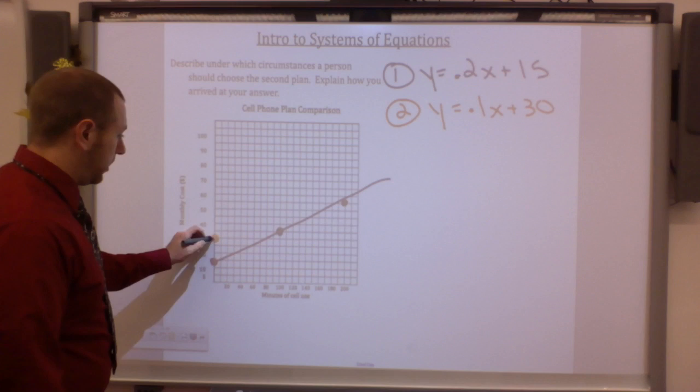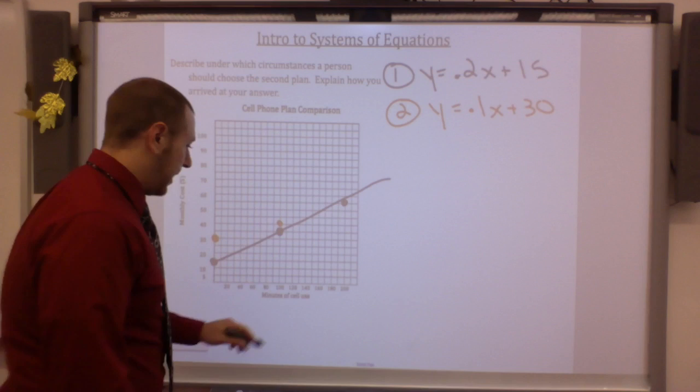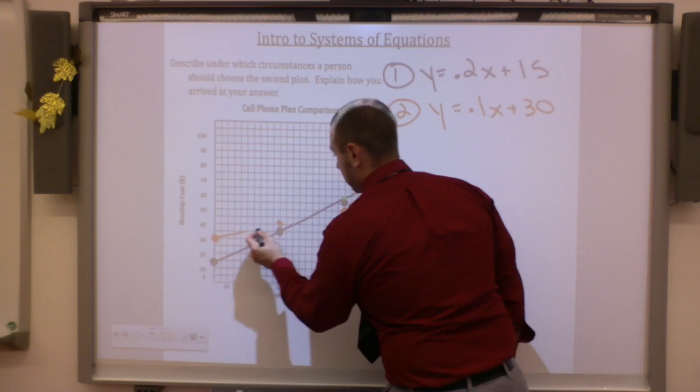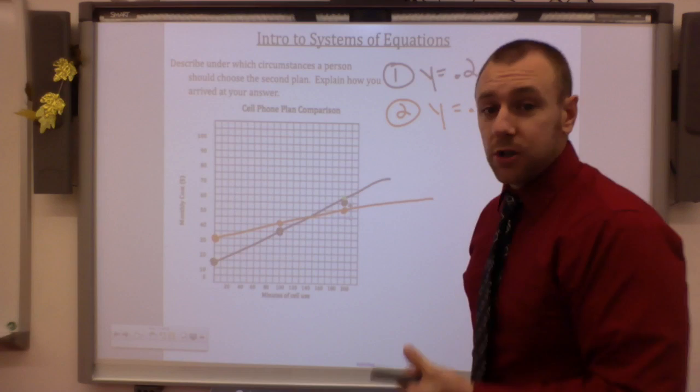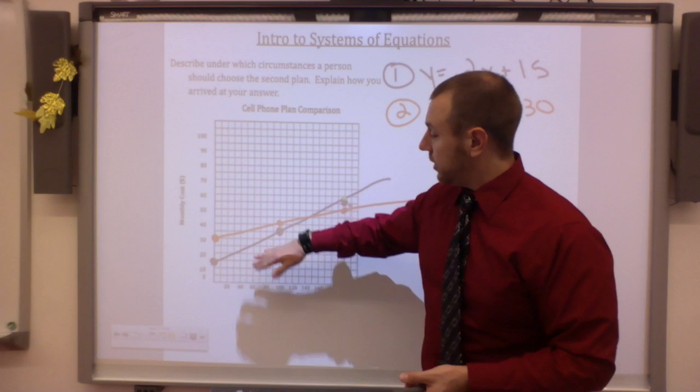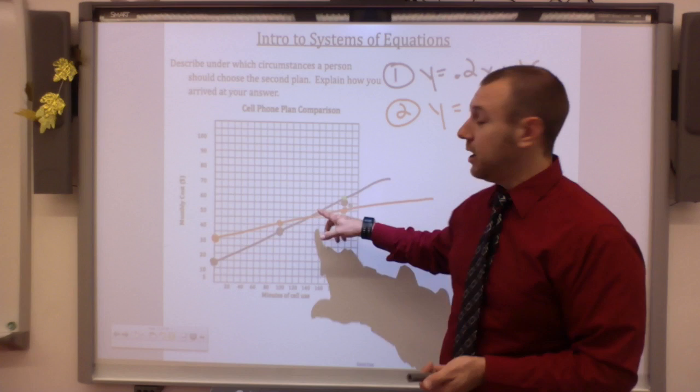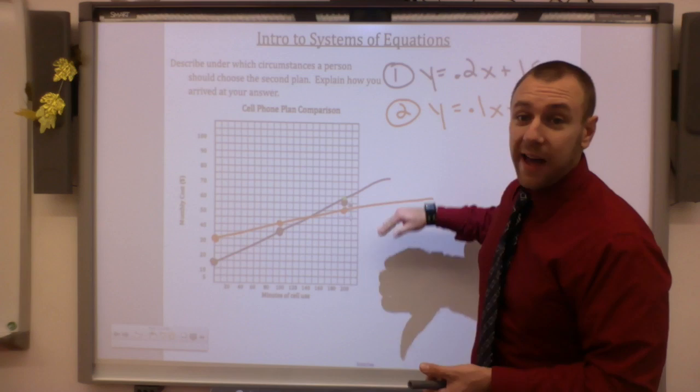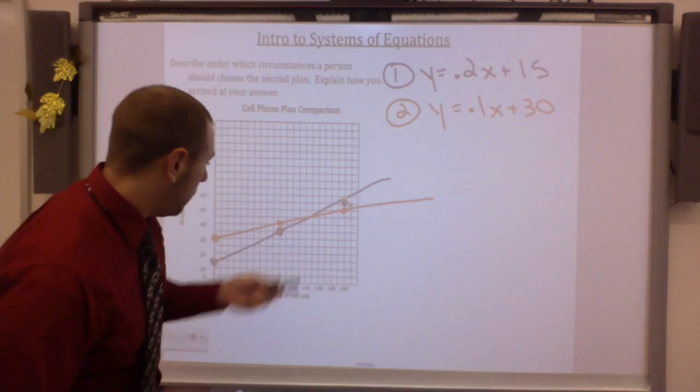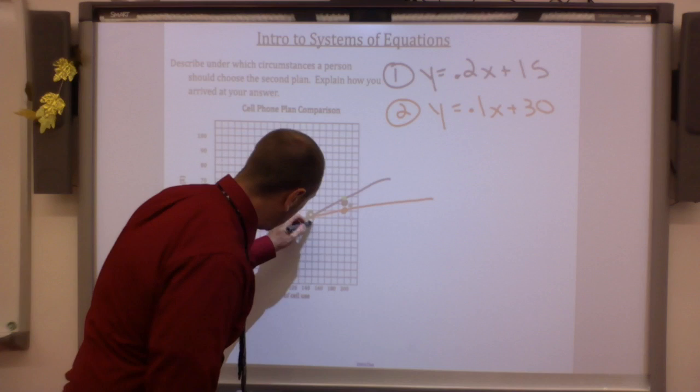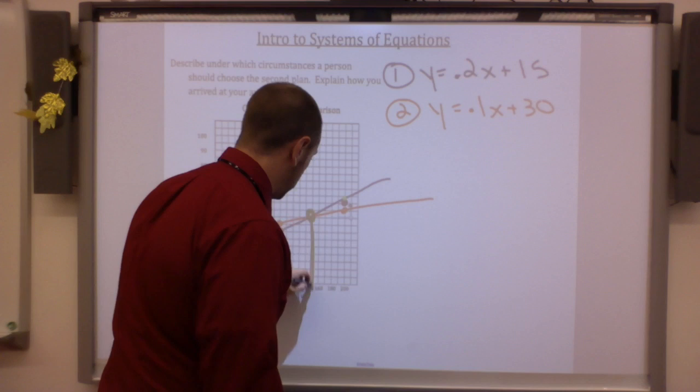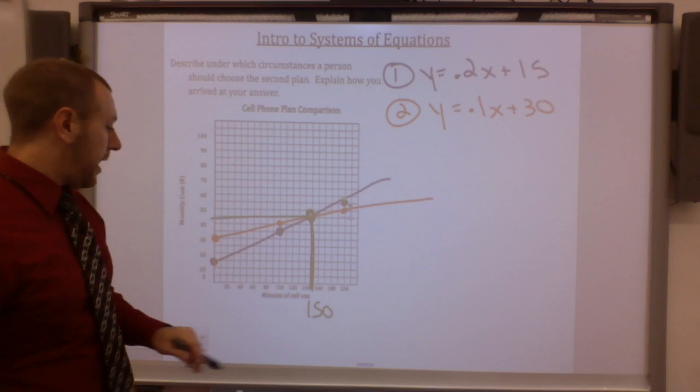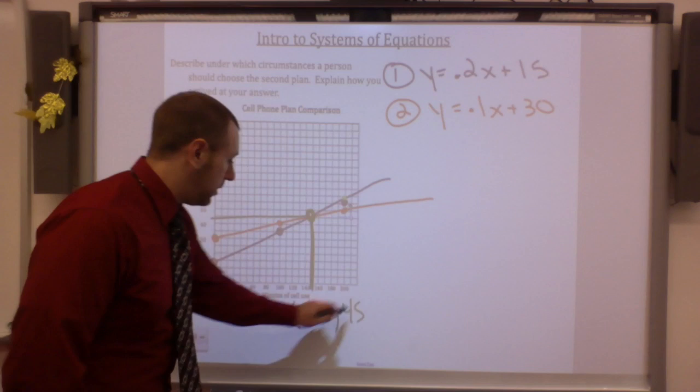I have those points already done because I've already plugged in those numbers. Now I can draw that straight line right there or as straight as Mr. Parsons can get it. And I would repeat the process with my second one. I'm going to start off at 30. Well, at 100 minutes, it was at 40. At 200 minutes, it was at 50. Boom. So now you see that I have two lines graphed. The purple line or this first situation is cheaper until they cross right here and then it gets more expensive. The second plan is cheaper after that crossing point. So how do I answer this question? Well, where is that crossing point? That crossing point is right here. That is at 150 minutes. 150 and at $45. So my point is 150, 45.